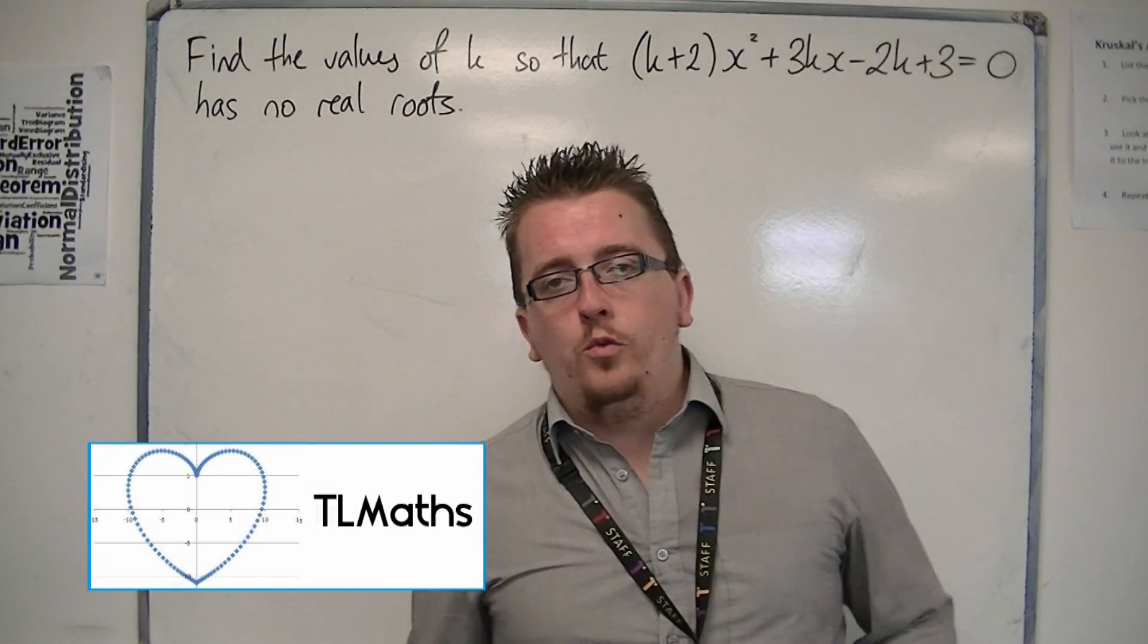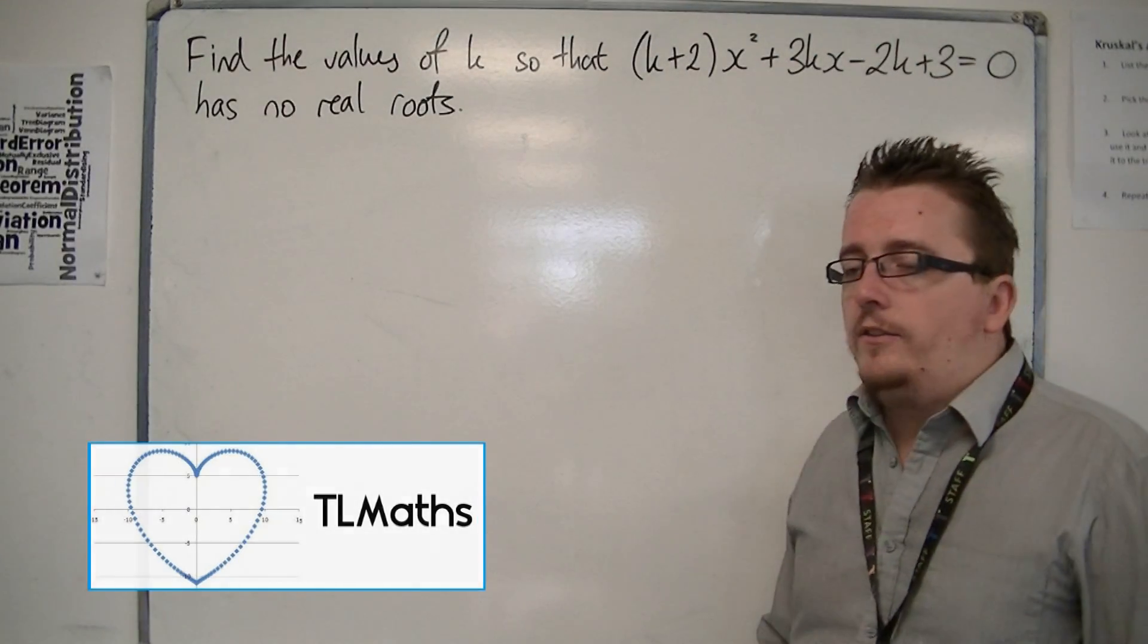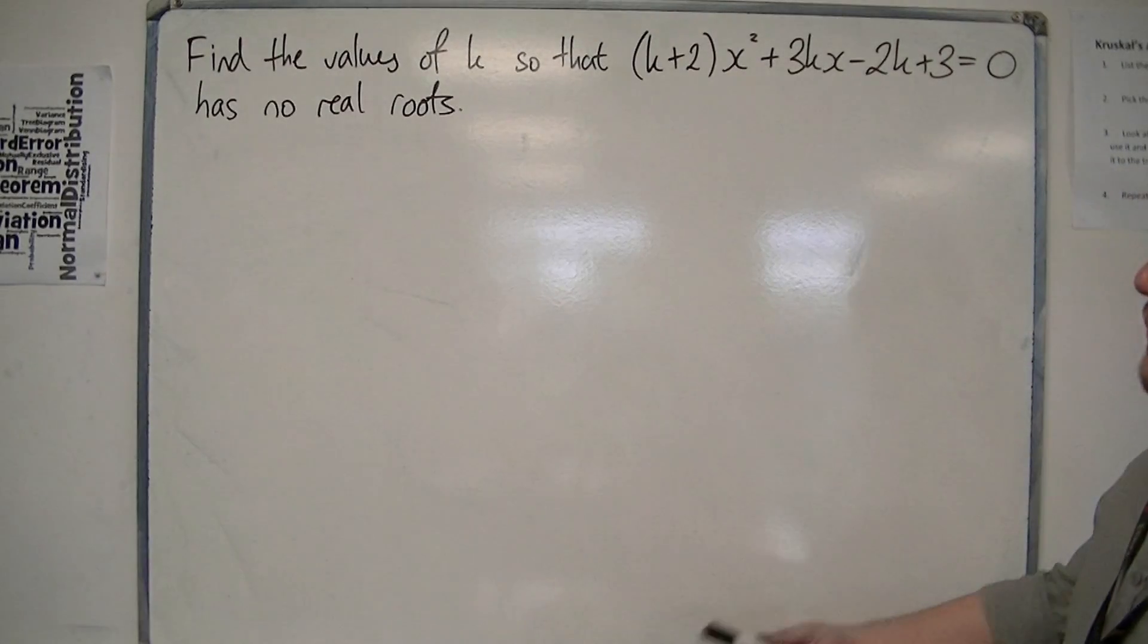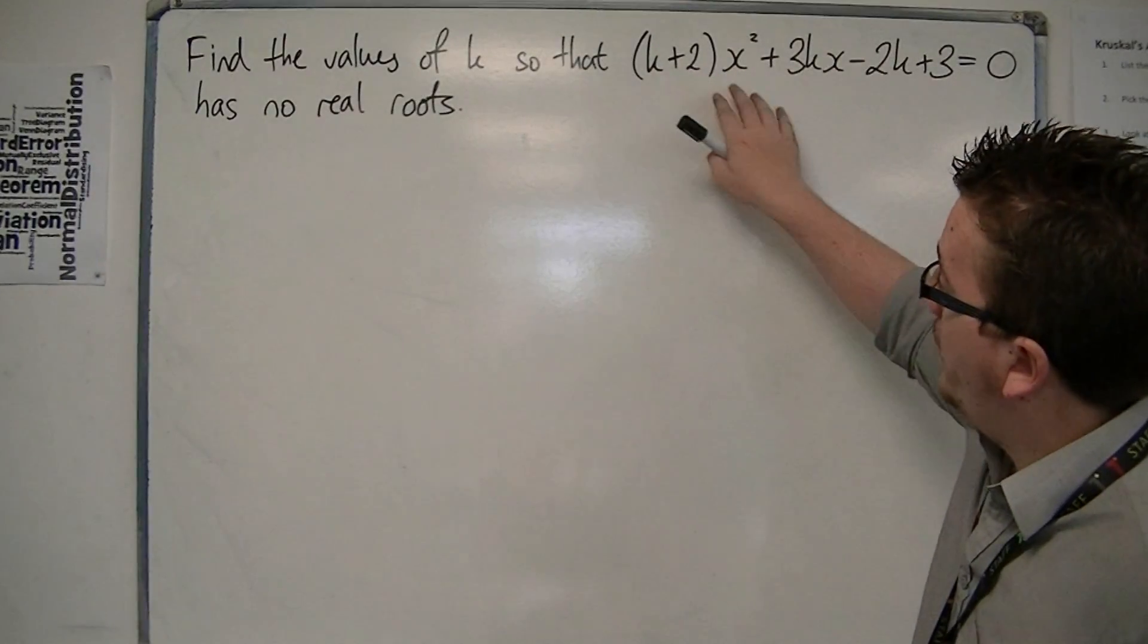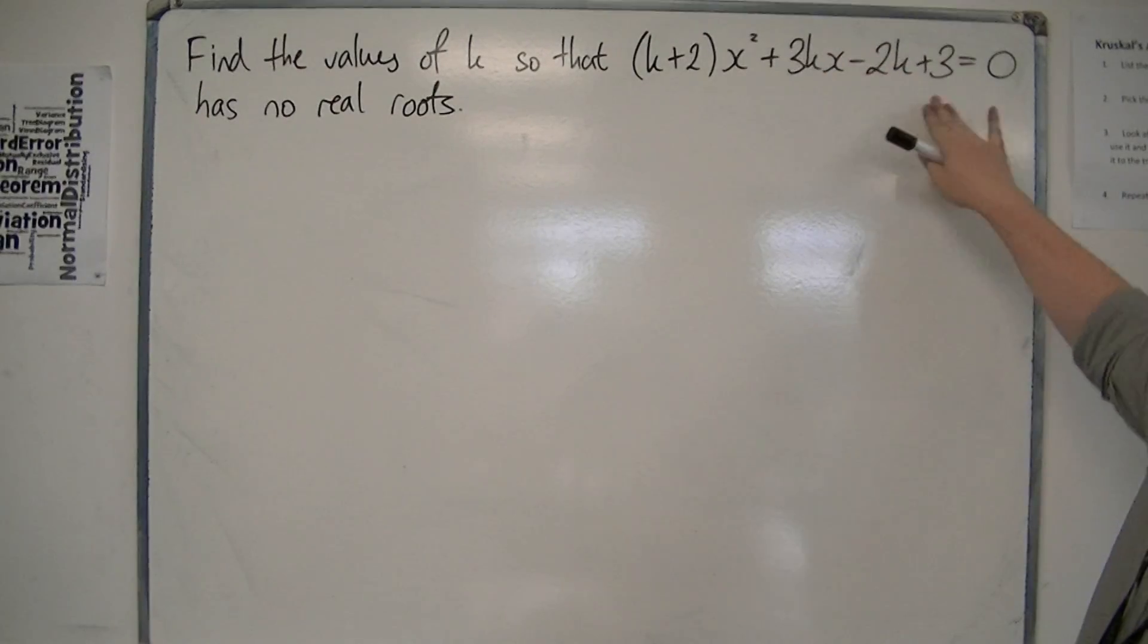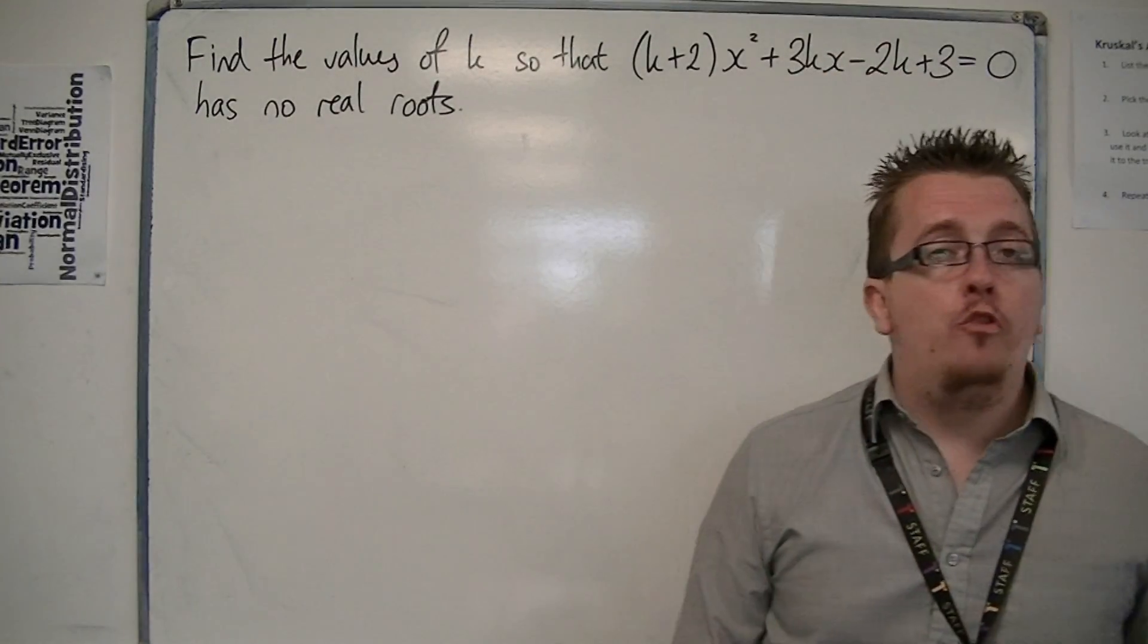So in this example, I'm going to go with a nice tricky example. Find the values of k so that (k+2)x² + 3kx - 2k + 3 = 0 has no real roots.